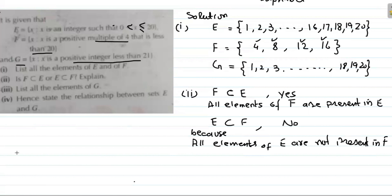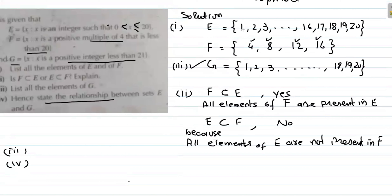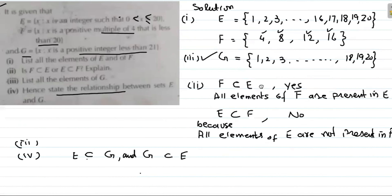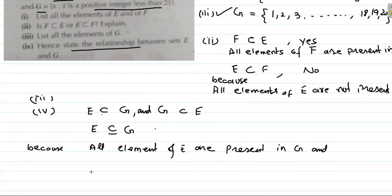For part three: list all elements of G and state the relationship between E and G. G = {1, 2, 3, ..., 20}. Since E = {1, 2, ..., 20} and G = {1, 2, ..., 20}, all elements of E are in G and all elements of G are in E. Therefore, E is an improper subset of G, because all elements of E are present in G and all elements of G are present in E.